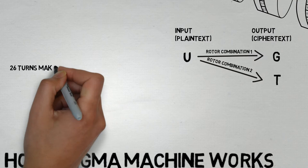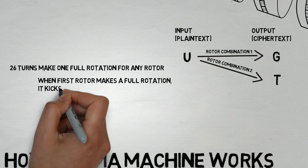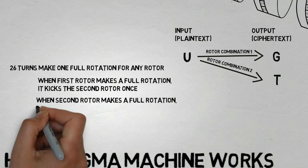Each rotor turns 26 times before making one rotation. Upon completion of a rotation, the first rotor will cause the second rotor to turn once. Similarly, after the second rotor makes one rotation, it will cause the third rotor to turn once.